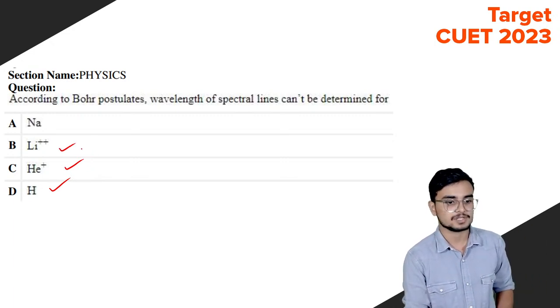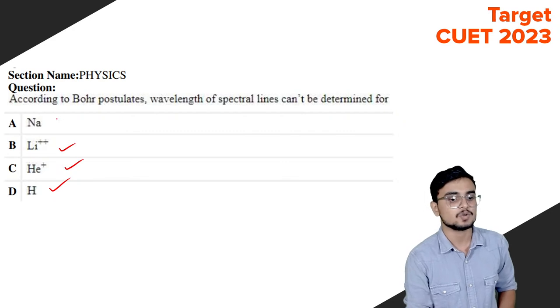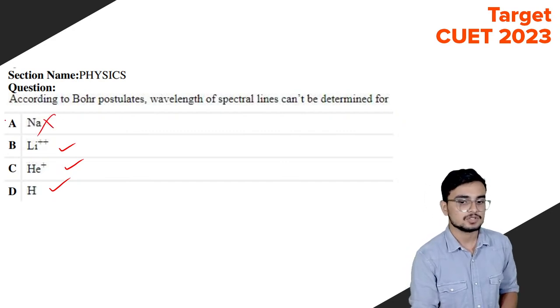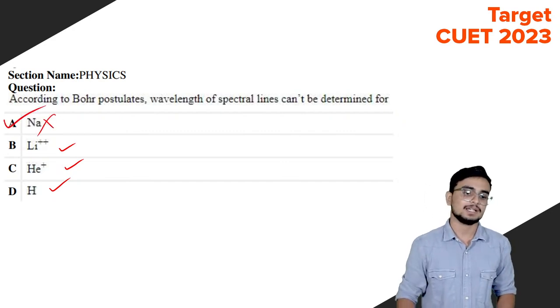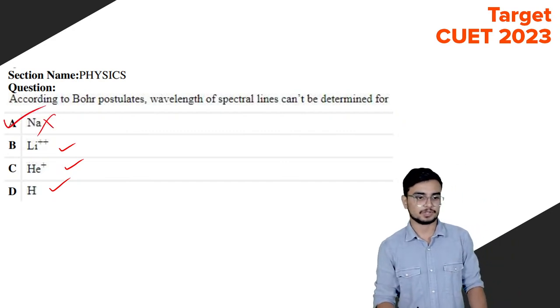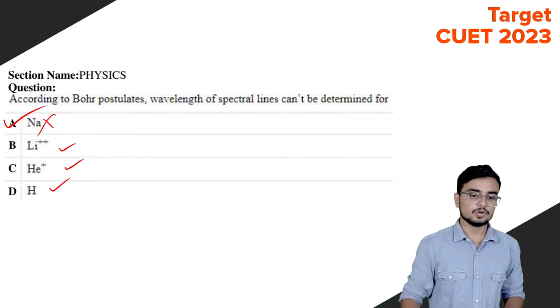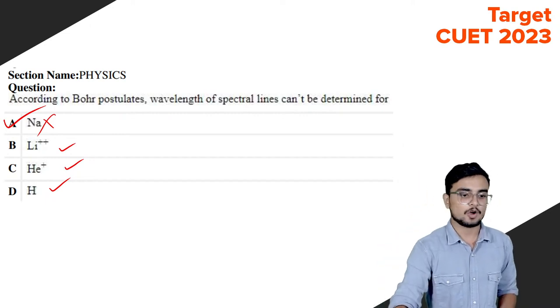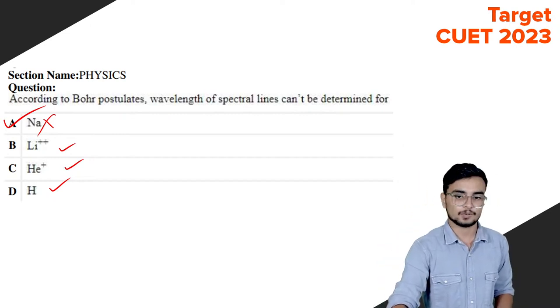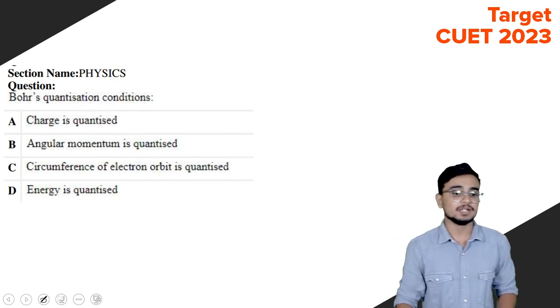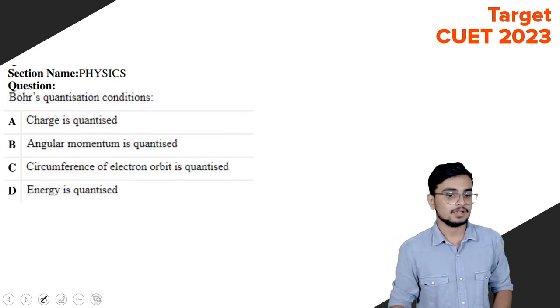When we check every system — hydrogen, helium, lithium at the one-electron level — sodium is not a one-electron system. So the correct answer is option A: sodium does not follow Bohr's model.